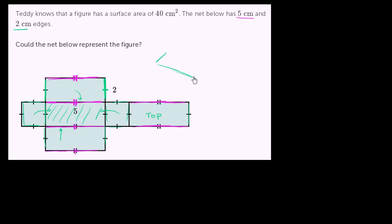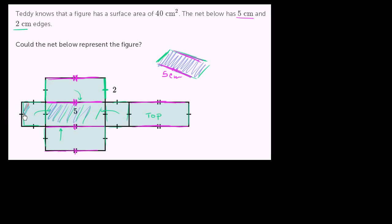The base has a length of 5 centimeters. This dimension right here - with the double hash marks - is 5 centimeters, the same as that dimension up there. When we fold up that side, that could be this side right over here along the 2 centimeter edge. When you fold this side in, that could be that side right over there.